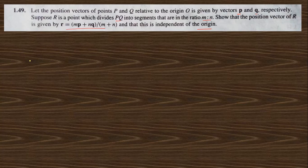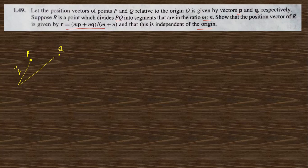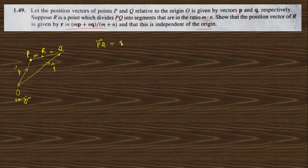So this is point P and this is point Q. The position vector of P is p-vector and the position vector of Q is q-vector. This is the origin O. There is a point R which divides PQ in the ratio m:n. The PQ vector is nothing but q-vector minus p-vector.